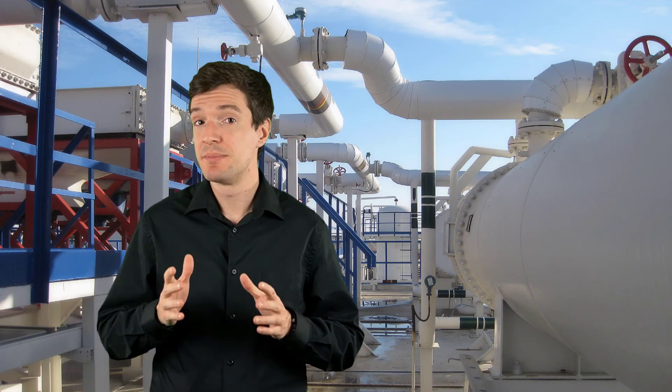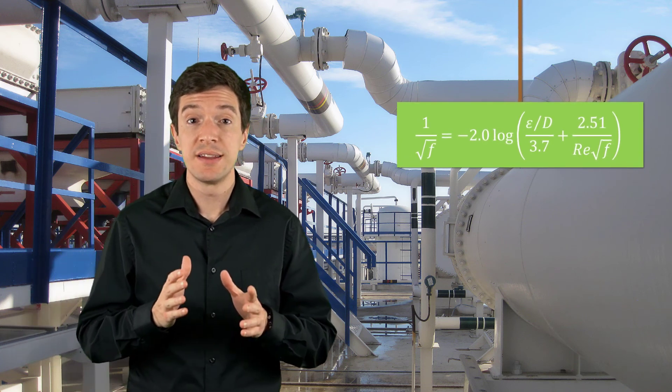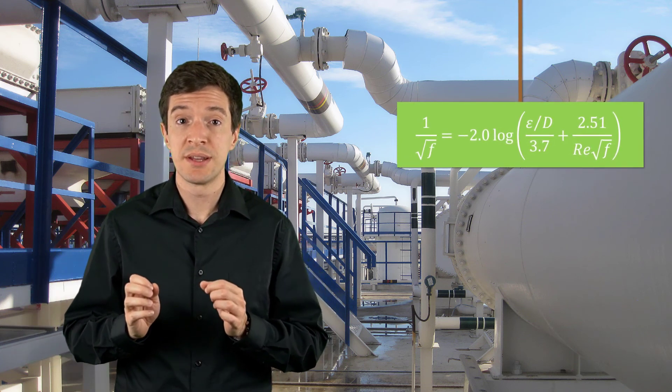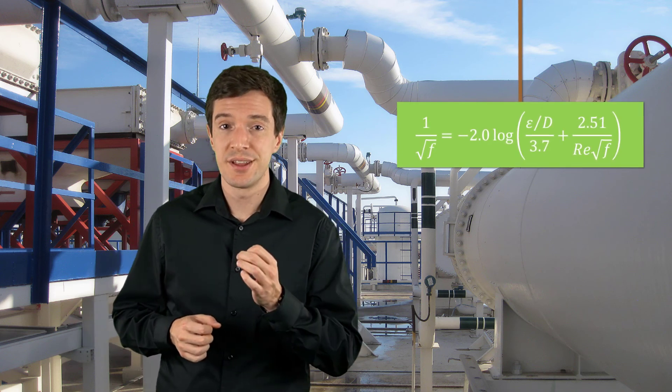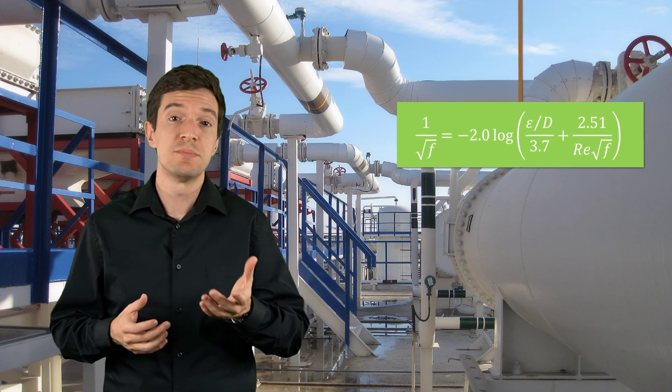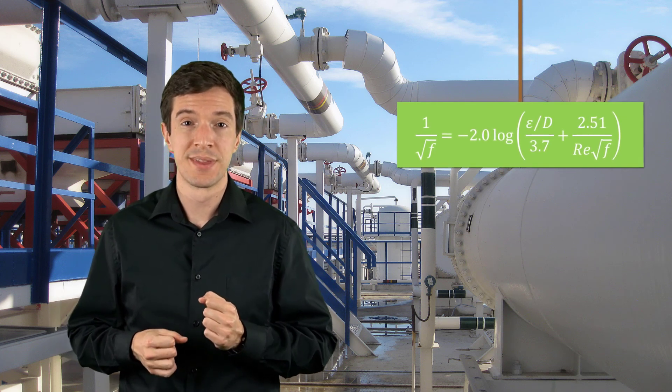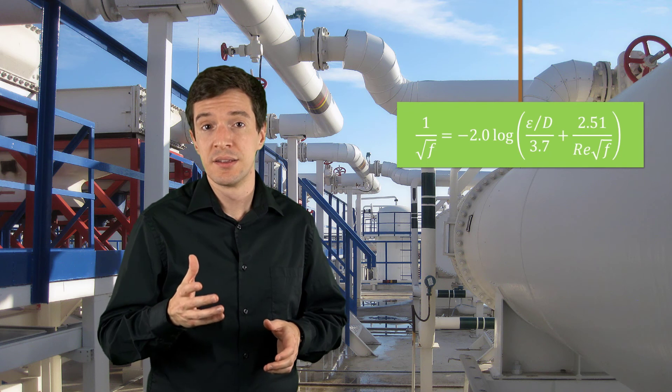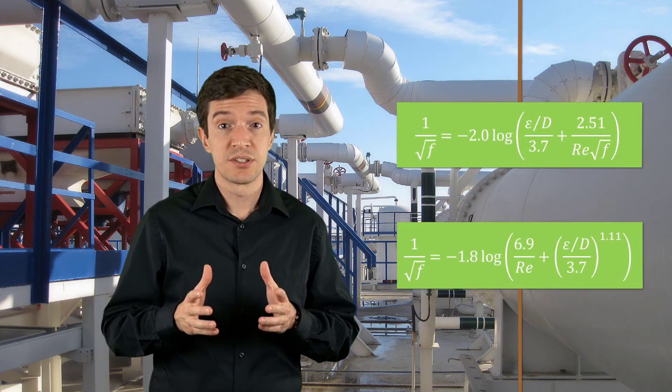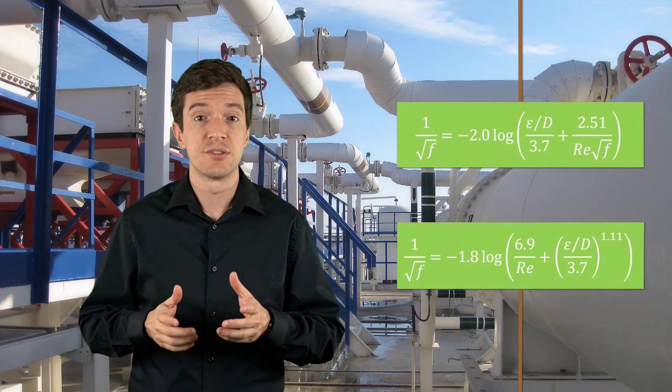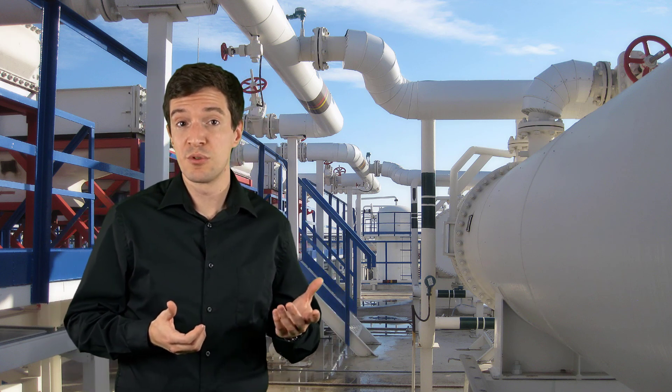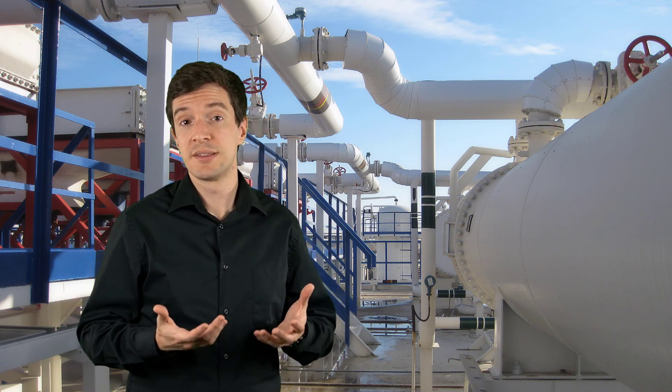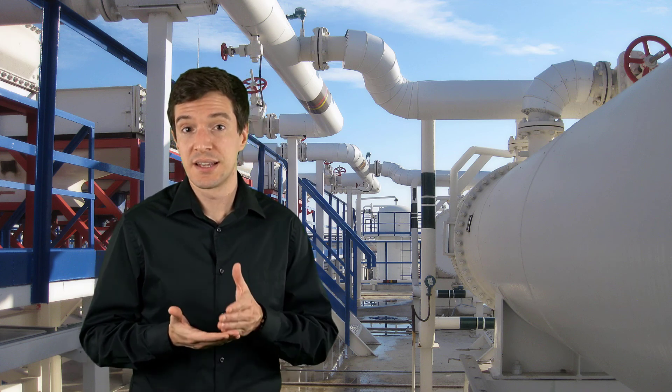The Moody chart can be summarized by a single formula valid for the entire non-laminar range: the Colebrook formula. This relation is implicit in f and must be solved numerically. Another researcher, Haaland, derived an explicit approximation of this equation that can be directly applied to estimate the friction factor. The Moody diagram and the Colebrook formula are based on experimental data and cannot provide exact predictions.